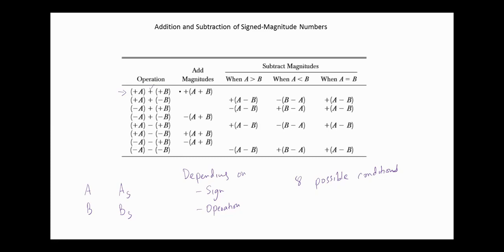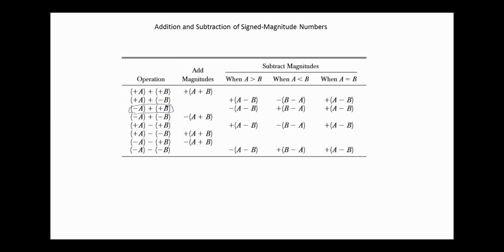If we are adding two positive numbers, then the result is positive and we just add the magnitudes. When the first number is positive and the second is negative, this is equivalent to subtracting A minus B. If A is greater than B, the sign is positive. However, if A is less than B, the result is negative. When A is greater than B, this is equivalent to subtracting B from A but the result is negative. And when A is less than B, this is equivalent to subtracting A from B and the result is positive.